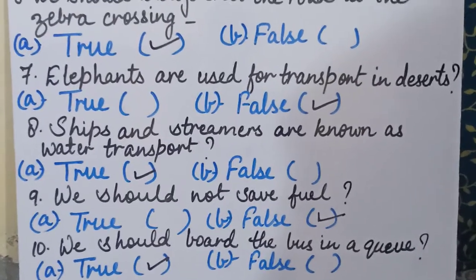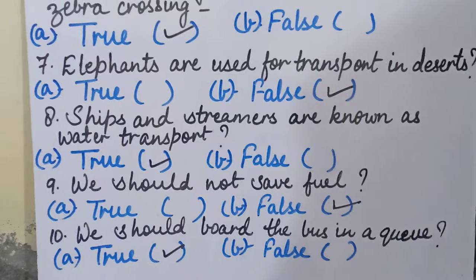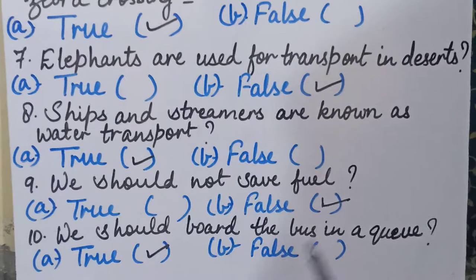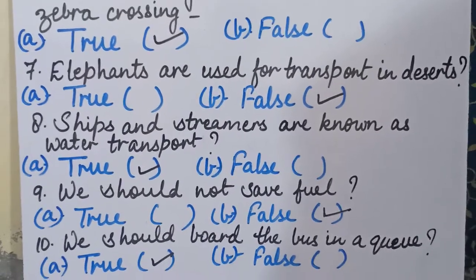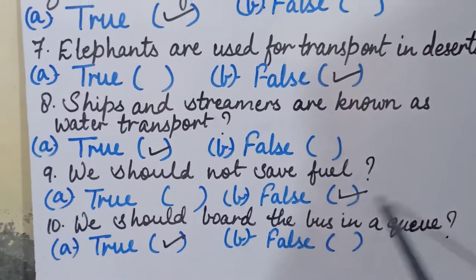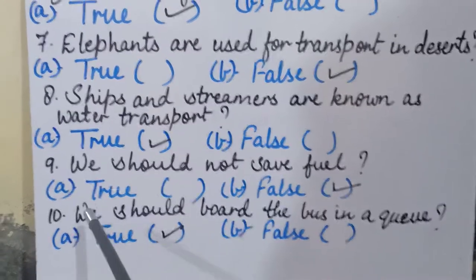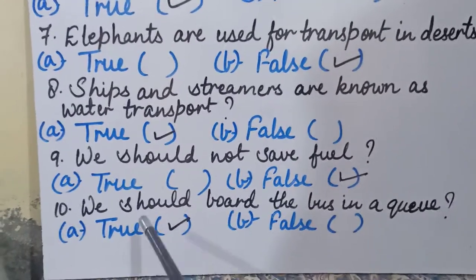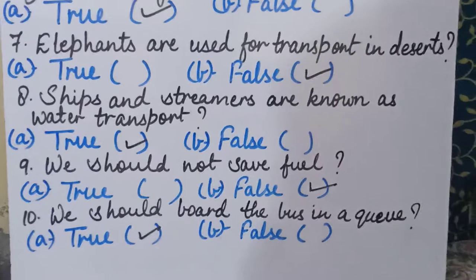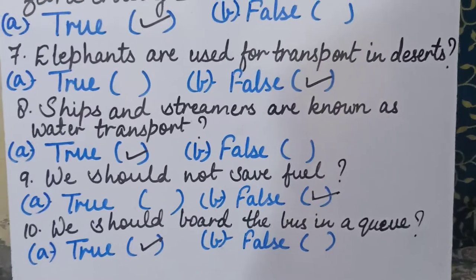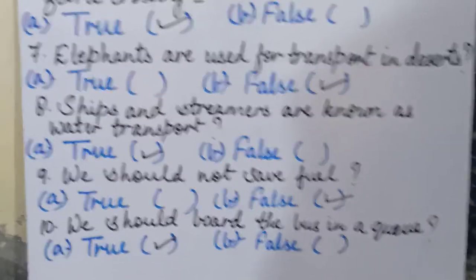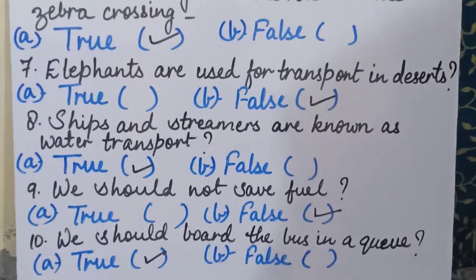The ninth sentence: 'We should not save fuel' — this is absolutely false. We should save fuel like petrol and diesel and not use it unnecessarily. The tenth sentence: 'We should board the bus in a queue' — this is true. We should always stand in a proper queue and not push anyone when boarding the bus.